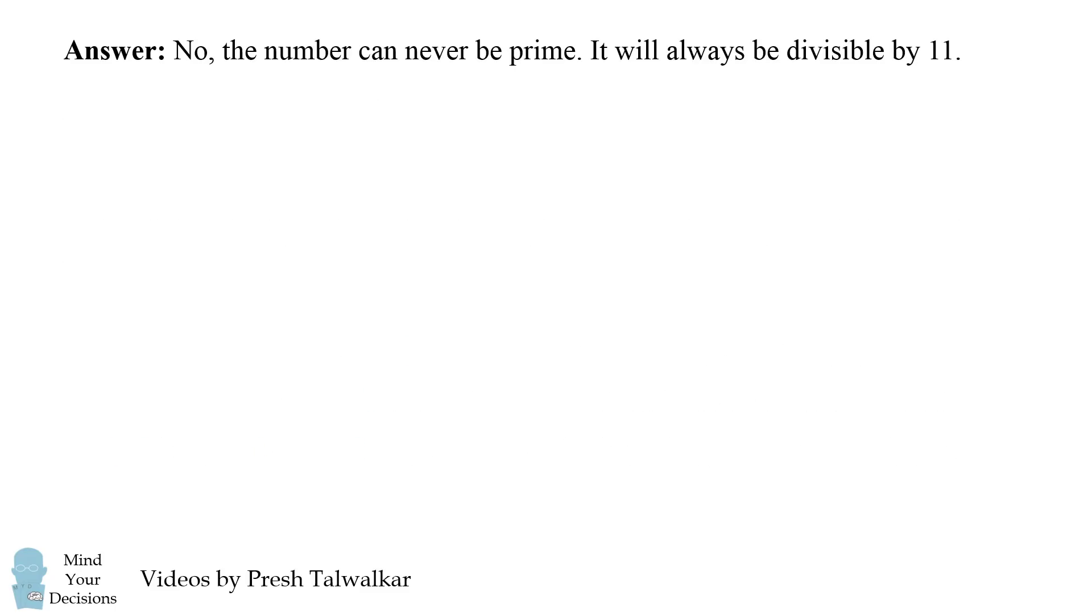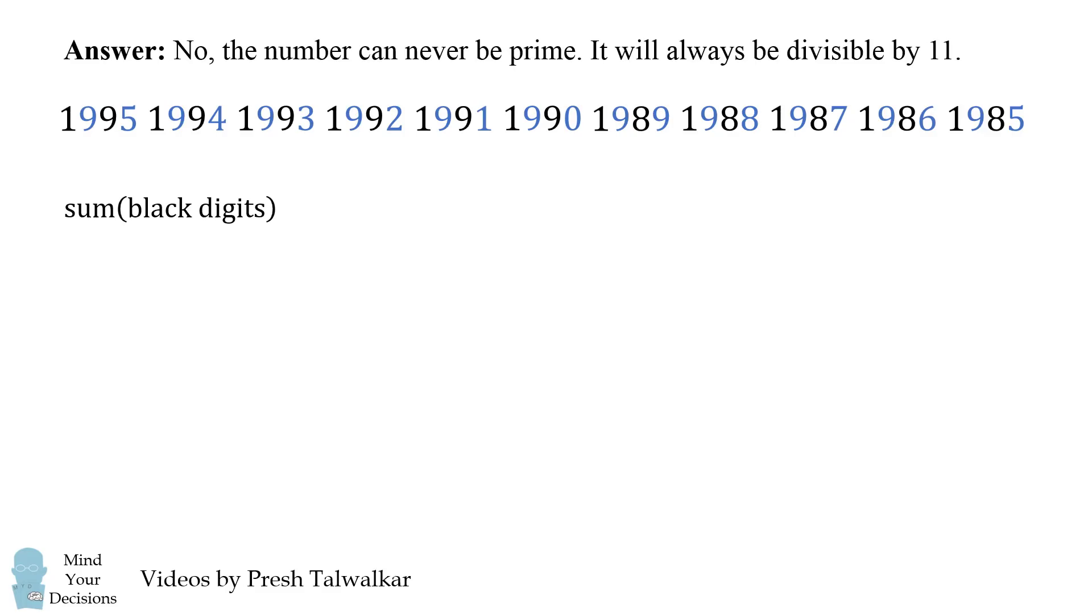So how can we use this principle for our current problem? Well, first let's write the 11 numbers in descending order. We need to calculate the alternating sum of this number. We'll do that by first calculating the sum of all the black digits, which is the digits in the odd positions.